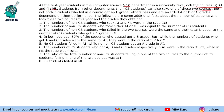Students who fail in a course get an F grade; others pass and are awarded A, B, or C grades. So there are four grades: A, B, C, F — where F means fail. The following are some additional facts about the number of students who took these two courses this year and the grades they obtained.